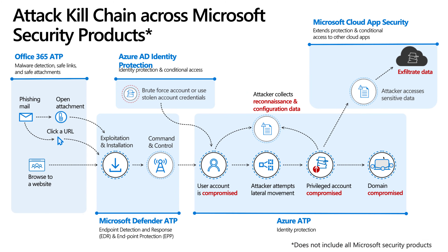When you think about Microsoft security products and where those align to the cyber attack kill chain, here's Microsoft's interpretation. A threat gets into the environment either through a phishing email or browsing to a compromised website, then runs code on that machine that exploits a vulnerability, installs itself, gains command and control and persistence, then compromises the user's account or finds a privileged account in the environment, gaining domain dominance to carry out the mission of exfiltrating data.